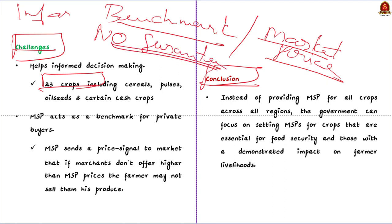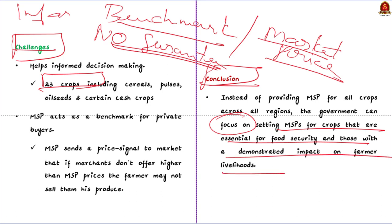While MSP doesn't guarantee market prices will always be higher, it ensures prices won't drastically fall below MSP. However, much remains to be done regarding MSP for different crops. Besides increasing the quantum and diversification of MSP, procurement of food grains must also be streamlined. In conclusion, instead of providing MSP for all crops across all regions, the government should focus on crops essential for food security and those with demonstrated impact on farmers' livelihoods, improving and modernizing the procurement mechanism, reducing middlemen, and expanding the reach of procurement agencies.